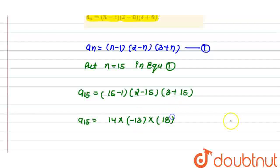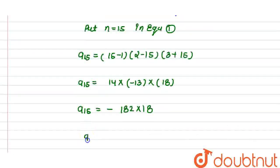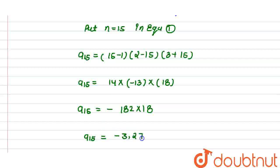Now, what do we need to do? We need to multiply this term. So a15 is equal to plus minus plus that is minus, and we know that 14 into 13 will be equal to 182 into 18. So a15 value is equal to minus 3,276.